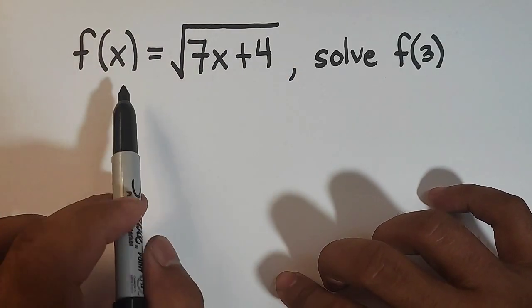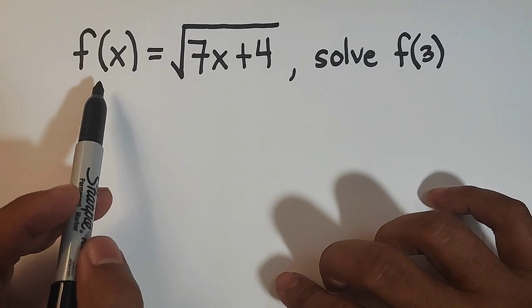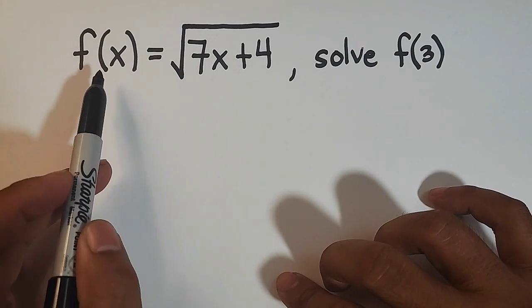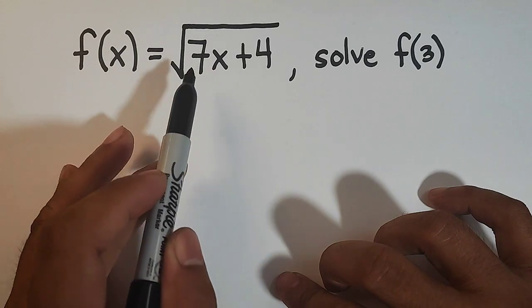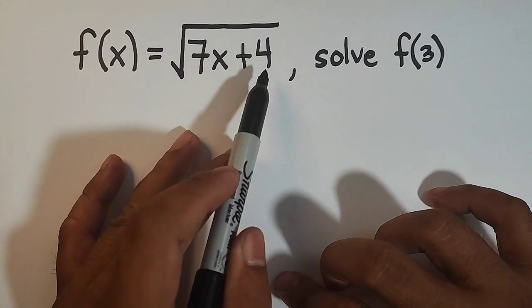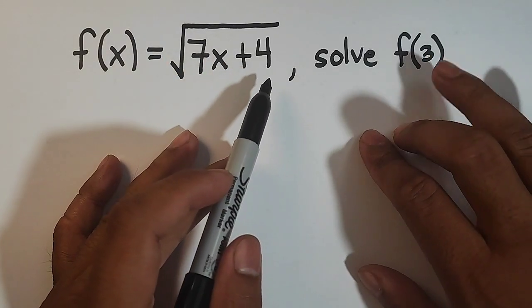We are given this function f wherein we need to evaluate. f of x is equal to the square root of 7x plus 4, and we are asked to evaluate f of 3.